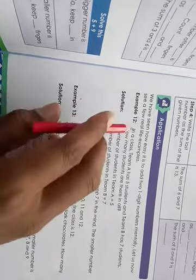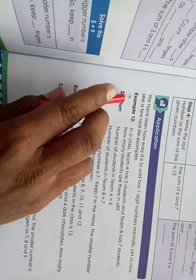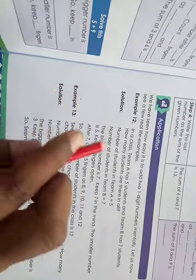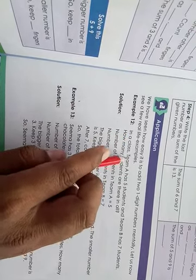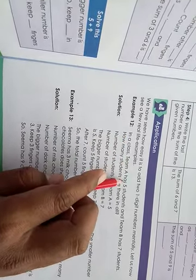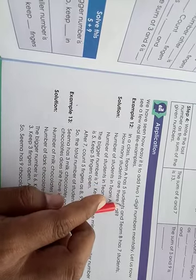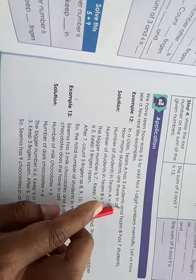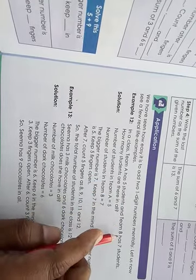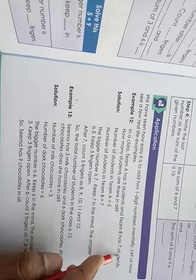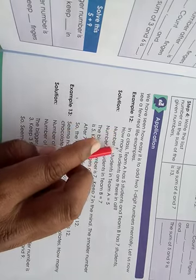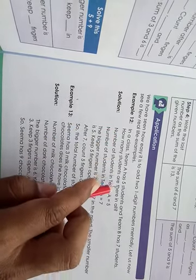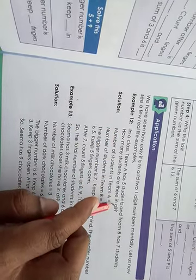Let us read with me and learn that example. Let us learn example number 12. In a class, team A has 5 students and team B has 7 students. How many students are there in all?